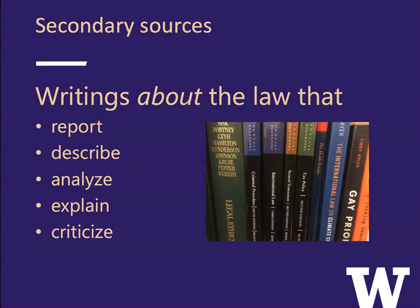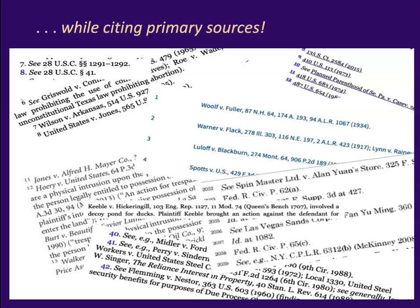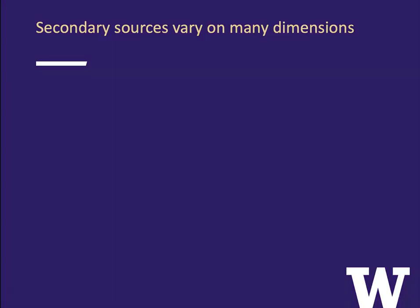Secondary sources are writings about the law. They report, describe, analyze, explain, and criticize, and they do this while citing primary sources. This is really important for your research, because if you want to find primary sources, a great way to do it is to find a good secondary source that lays out what the important cases and statutes are. Secondary sources vary on many dimensions.